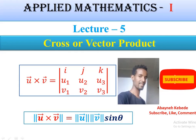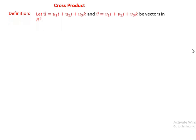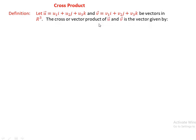The definition: let the vectors u be given as u1·i plus u2·j plus u3·k, and vector v be given as v1·i plus v2·j plus v3·k, be vectors in R³. The cross or vector product of u and v is the vector given by u cross v, equal to the determinant.